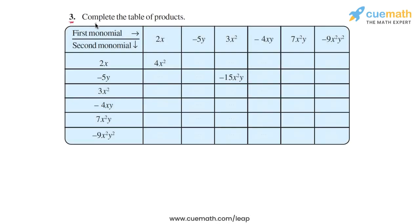In question 3, we have to complete this table of products. Each product in the table is calculated by taking the first monomial from the topmost row and the second monomial from the leftmost column.